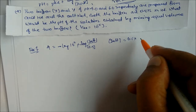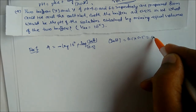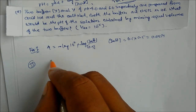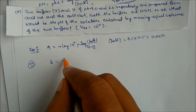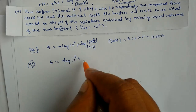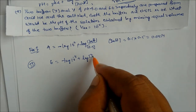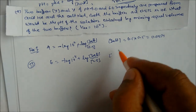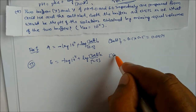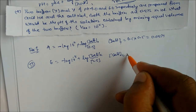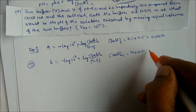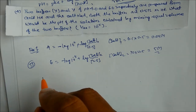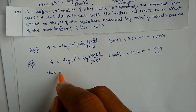For buffer X (pH=4): 4 = −log(10⁻⁵) + log([salt₁]/0.5), solving gives [salt₁] = 0.1×0.5 = 0.05 mol/L. For buffer Y (pH=6): 6 = −log(10⁻⁵) + log([salt₂]/0.5), solving gives [salt₂] = 10×0.5 = 5 mol/L.